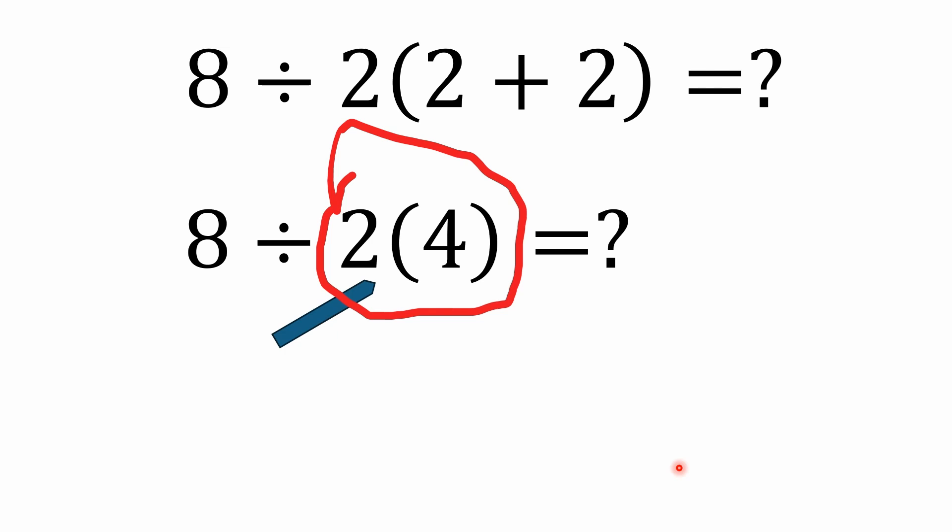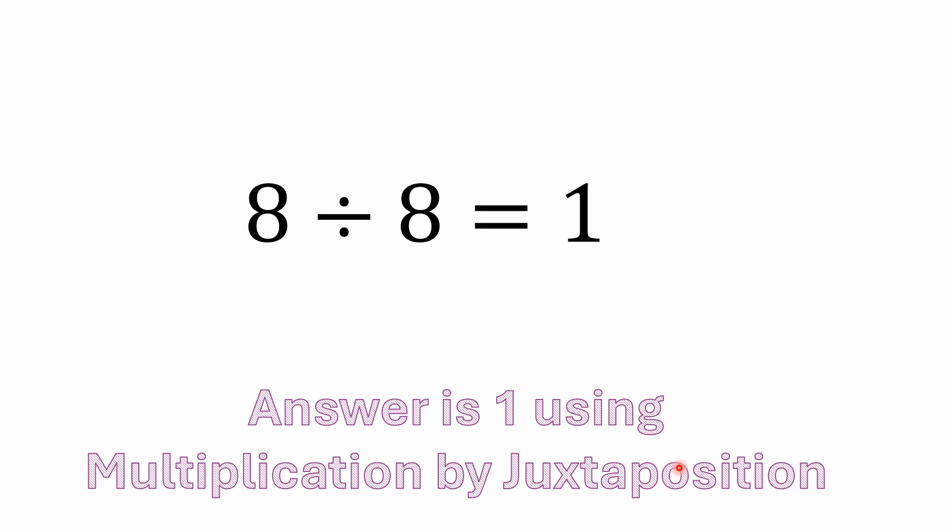Now here's where it gets a little flaky for some. According to multiplication by juxtaposition, you would solve the juxtaposition multiplication first before doing the division. So you basically break that left to right concept of multiplication and division, and you would actually do that multiplication first, which would be 2 times 4, which would be 8, leaving you with 8 divided by 8 equals 1. So if I see somebody leaving an answer online saying the answer is 1 and they're citing multiplication by juxtaposition, that's fine.